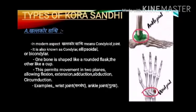Khalla Kora Sandhi: In the modern aspect, Khalla Kora Sandhi means condyle joint. It is also known as a condylar joint. One bone is shaped like a rounded flask and the other is like a curve. This permits movement in two planes, allowing flexion, extension, adduction, abduction, and circumduction. It is present in the wrist joint i.e. Manibandha and ankle joints.